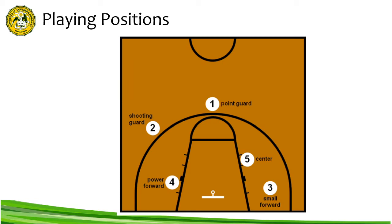The point guard runs the offense and is usually the team's best dribbler and passer, also defending the opponent's point guard and trying to steal the ball. The shooting guard, or number two, creates a high volume of shots on offense — mainly long range — and guards the opponent's best perimeter player on defense. The shooting guard is usually the team's best shooter and can make shots from long distance while also being a good dribbler.